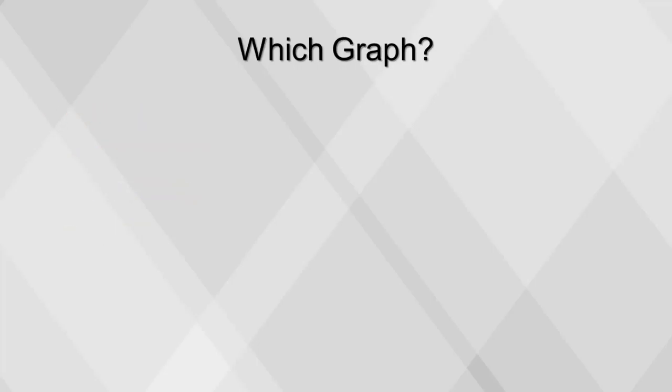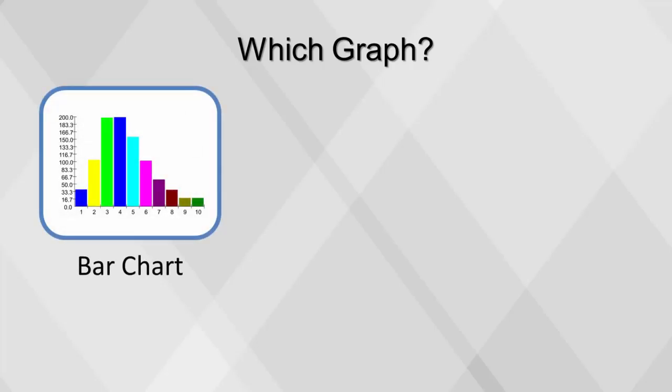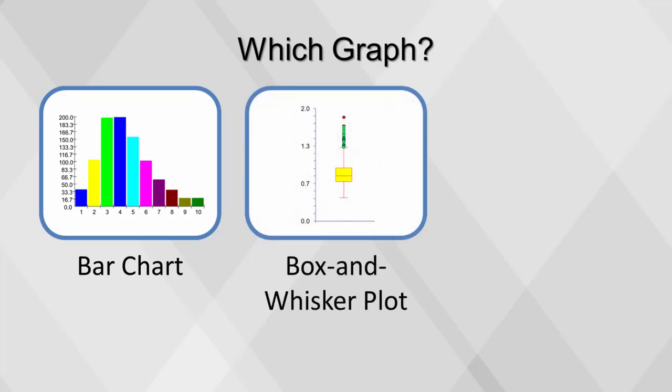It's important to know which graph to use. If the variable is categorical, look at it using a bar chart. If it is continuous, you should examine it using either a box and whisker plot or a histogram.